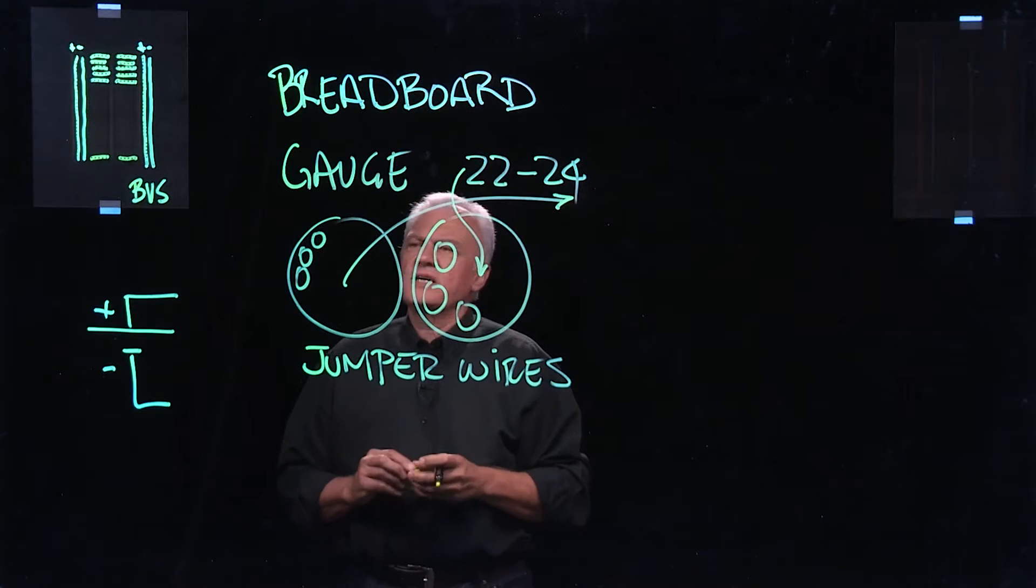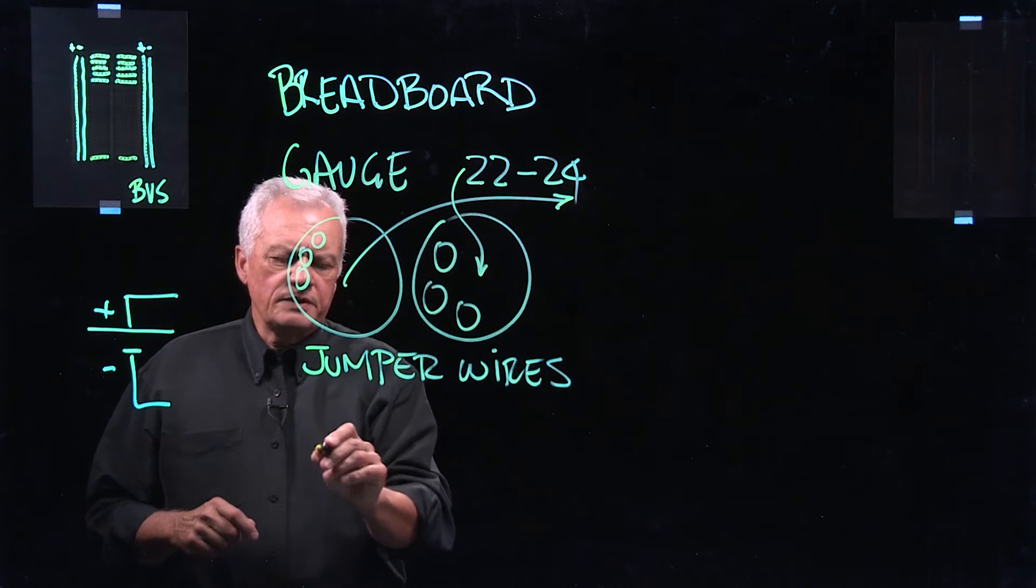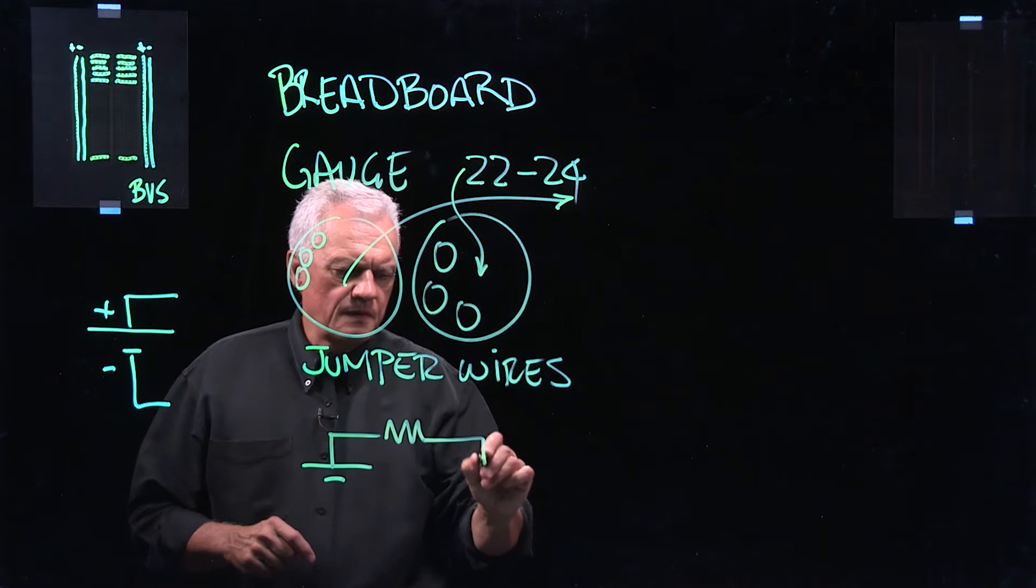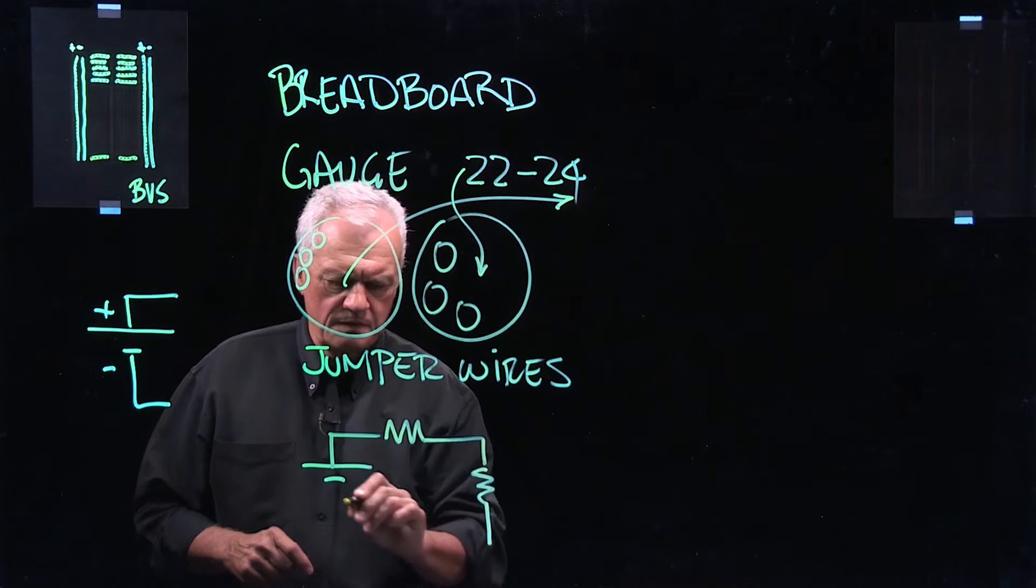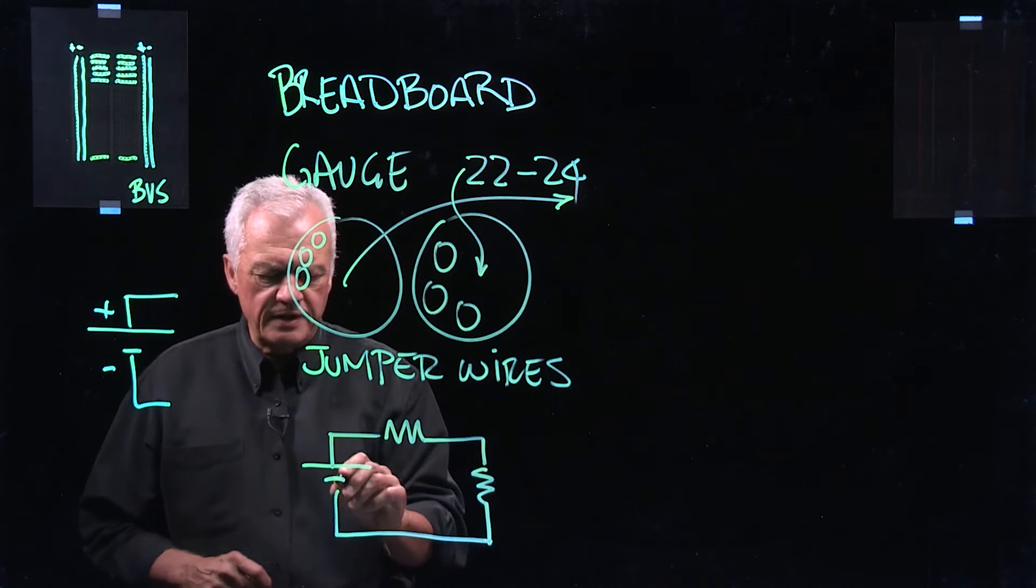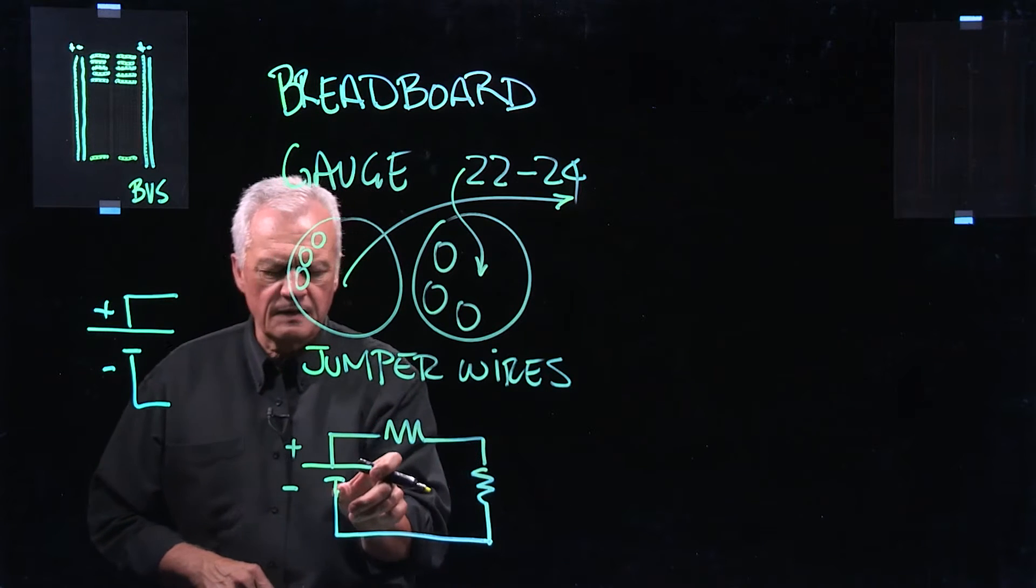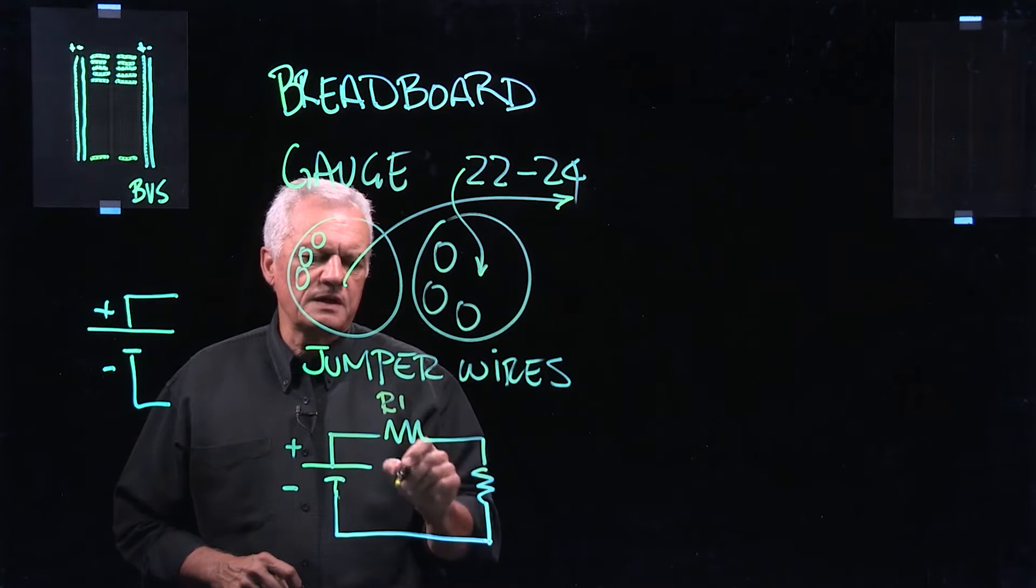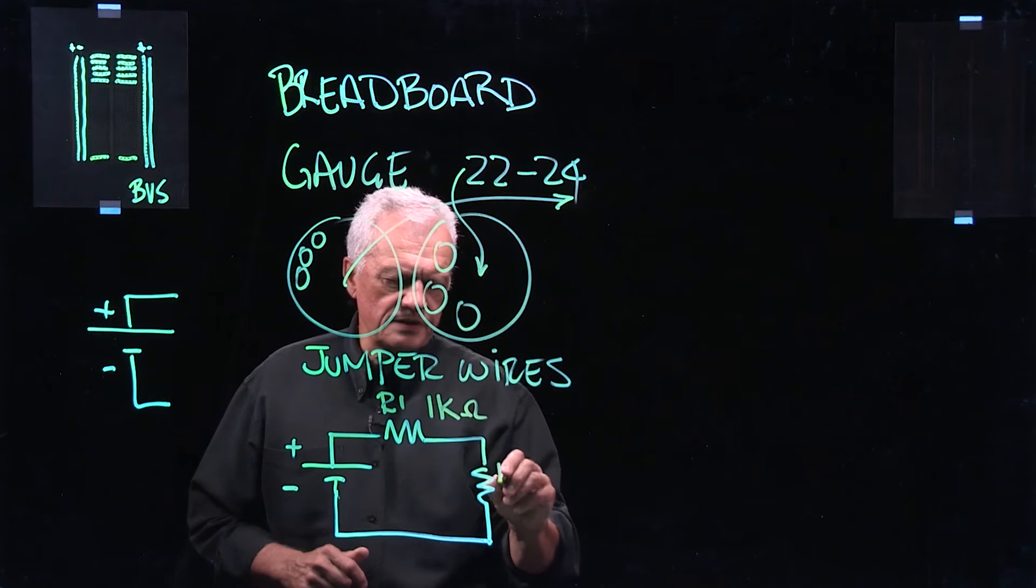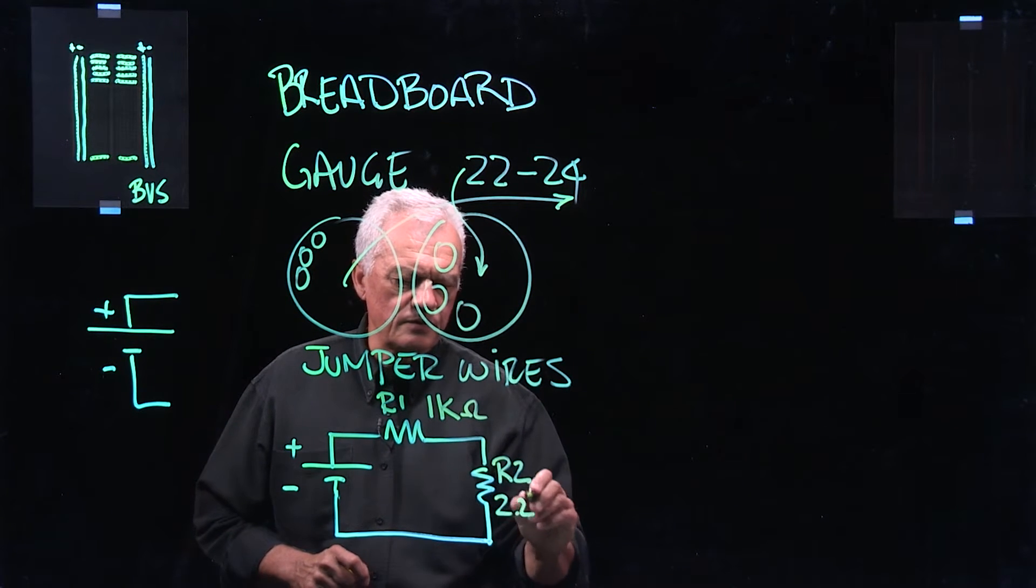So why do this? Well, it's for the ease of connecting parts together. For example, I'm going to put a circuit together. Let's say this circuit here. Now, this is a schematic. So this is a battery, and it has some voltage. And this is a resistor, R1, of some value, let's say 1,000 ohms. And this is another resistor, R2, of some value, let's say 2,200 ohms.